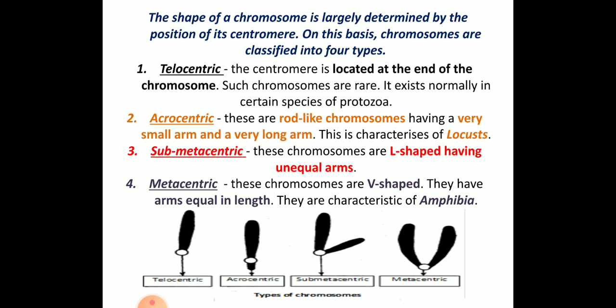In telocentric chromosomes, the centromere is located at the end of the chromosome. Such chromosomes are very rare and they exist normally in certain species of protozoans.